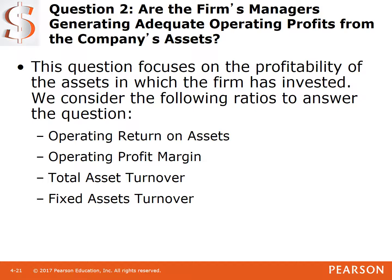To summarize liquidity: can the firm pay its bills? We look at the current ratio and the quick ratio. We look at how quickly we collect money and how many times a year we collect on accounts receivables. We look at how many days it takes to sell inventory and how many times a year we sell out our inventory.